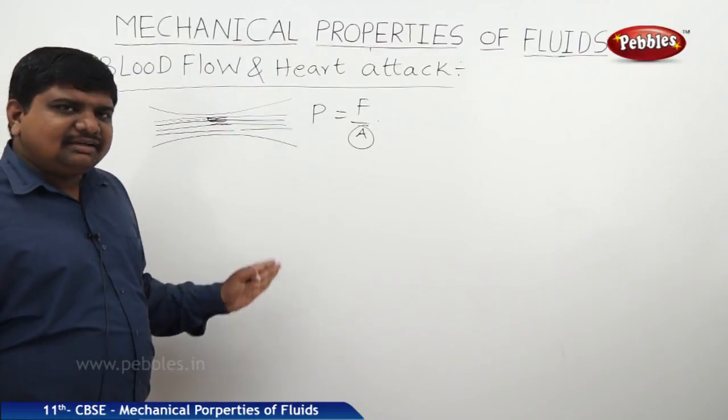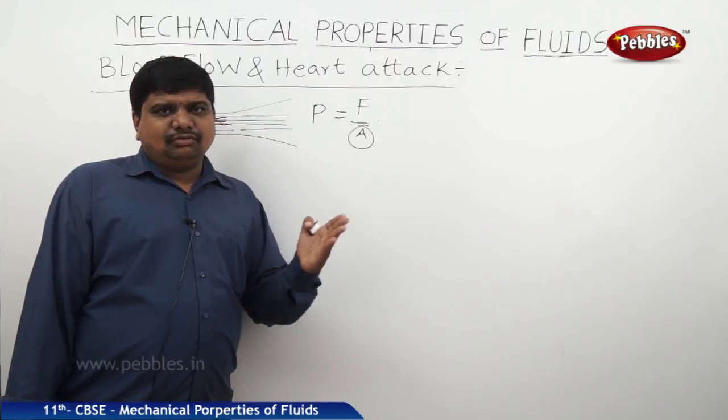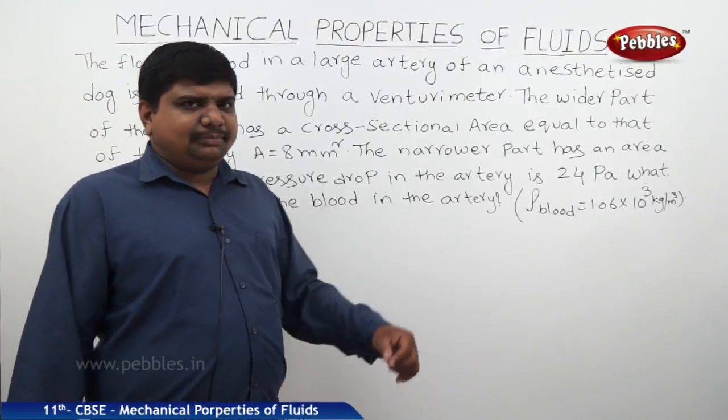So how is it calculated with the help of venturimeter? For that purpose we should observe one numerical. This problem is related to the venturimeter and blood flow.